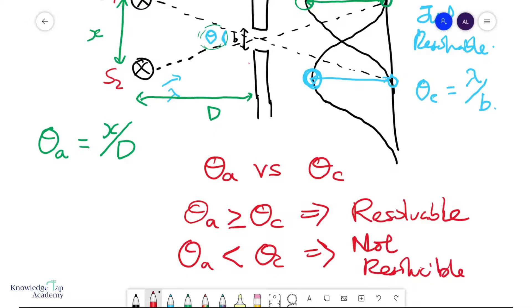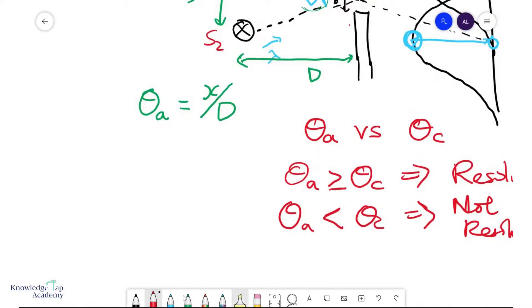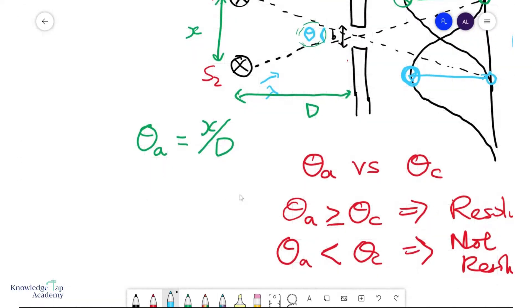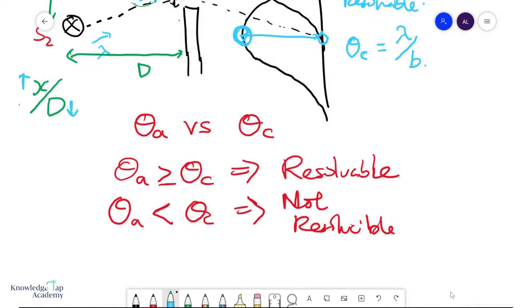This is where it makes a lot of intuitive sense, right? Because this is basically saying that if theta actual is large, you've got a better chance of resolving them. And think about what that means. A large theta actual either means d is small, so you're very close to the sources, so when you're close to two sources you can definitely see them separately, or they are very far apart, which also makes sense. So this is Rayleigh's criterion. It checks whether any two sources can be resolvable or not.